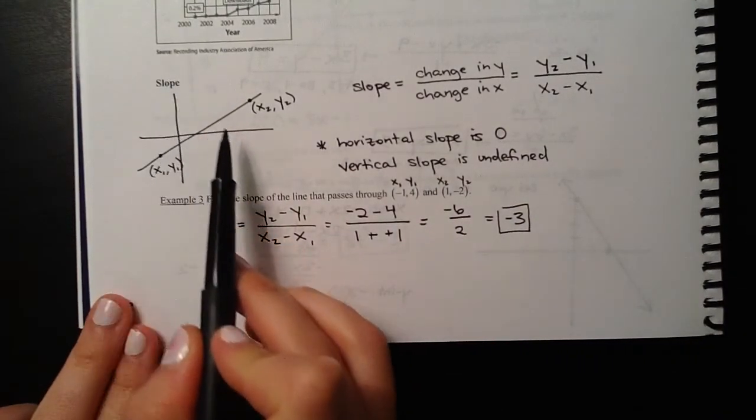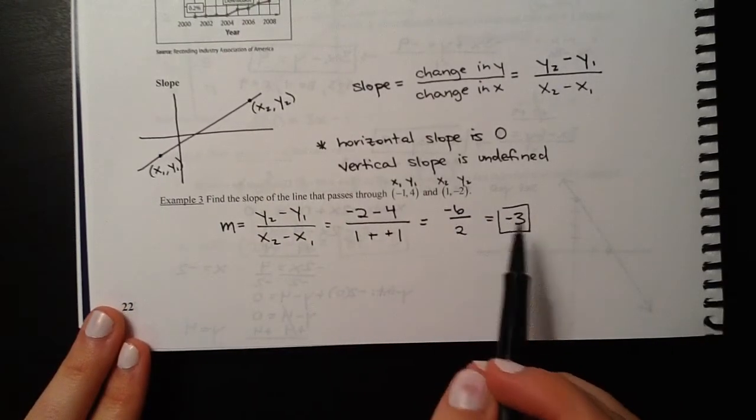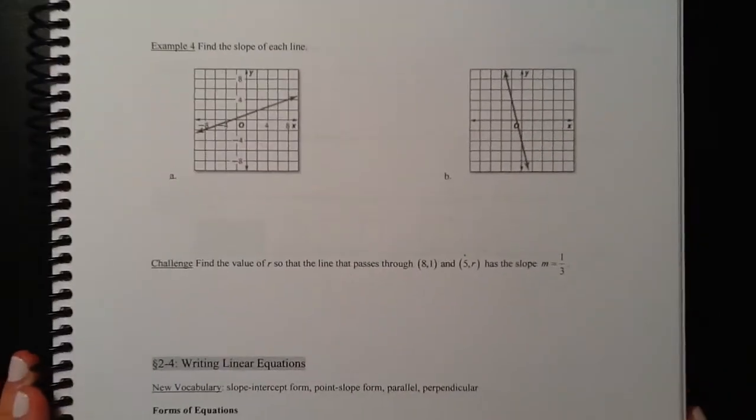The slope between those lines would be a negative 3. That means, first of all, that it's sloping the opposite way that this line does. It means every time my x value goes up 1, my y value goes down 3. That's what that slope means.